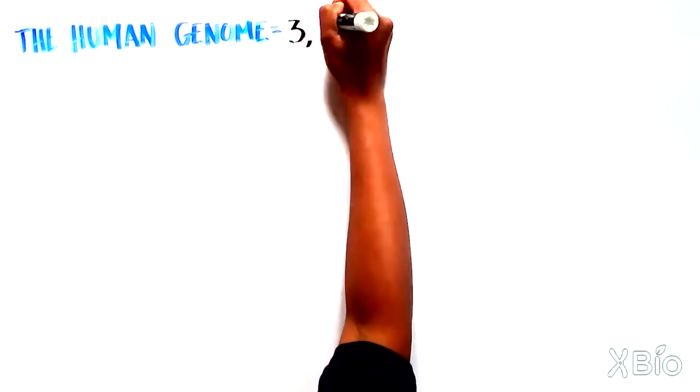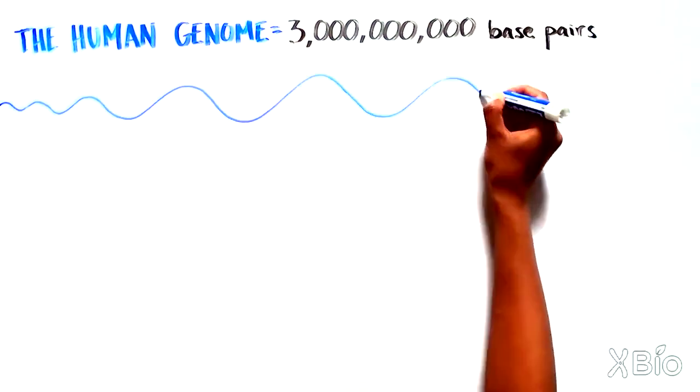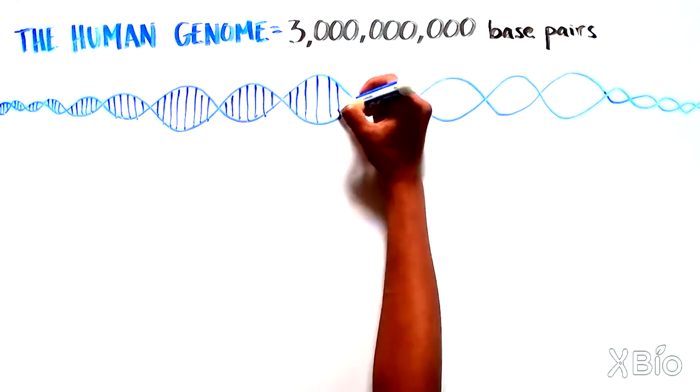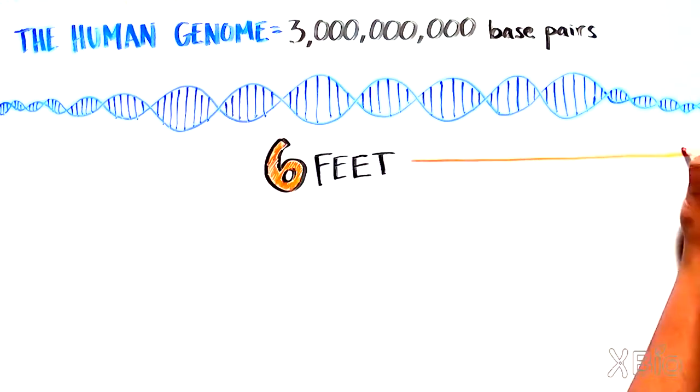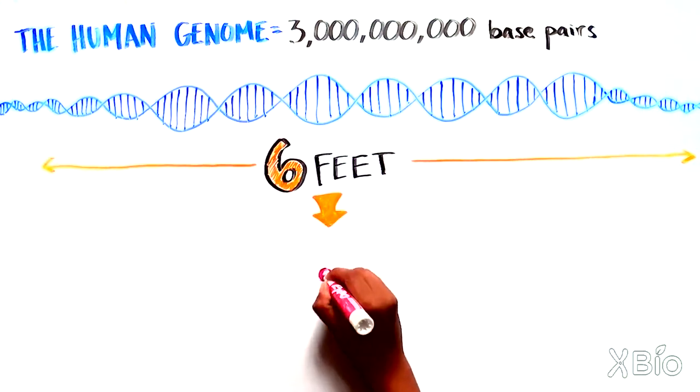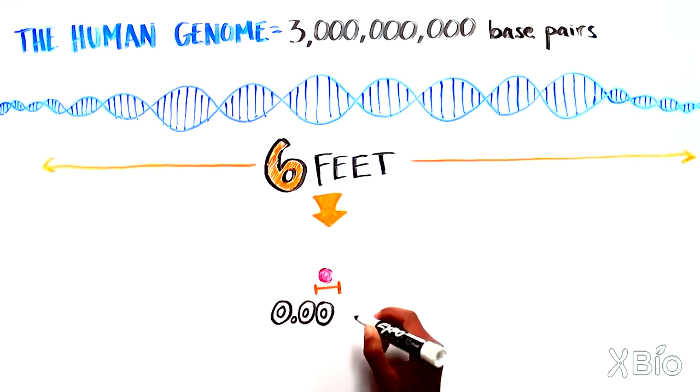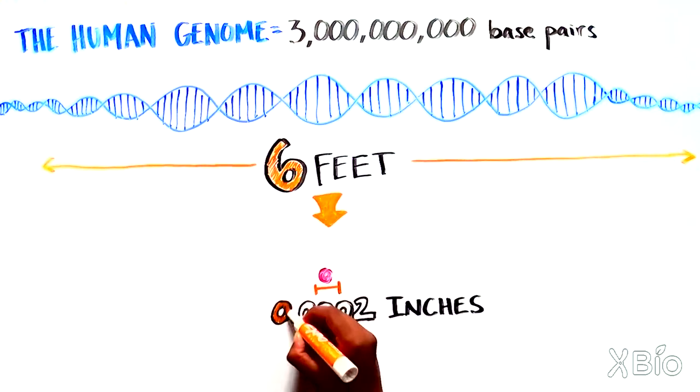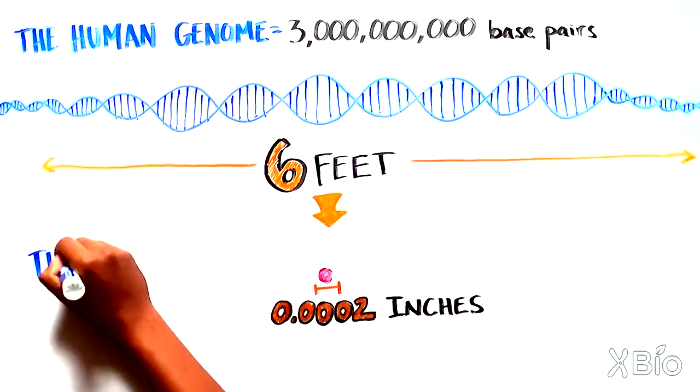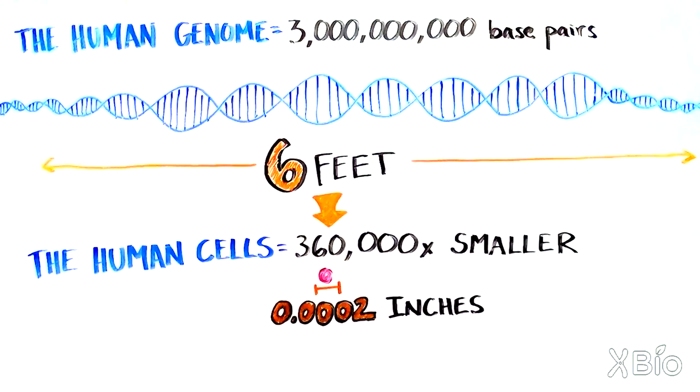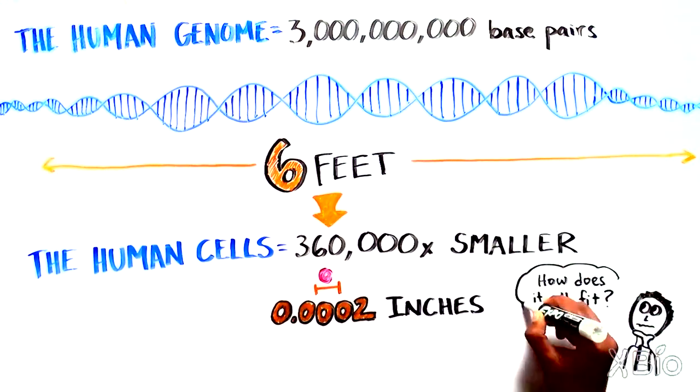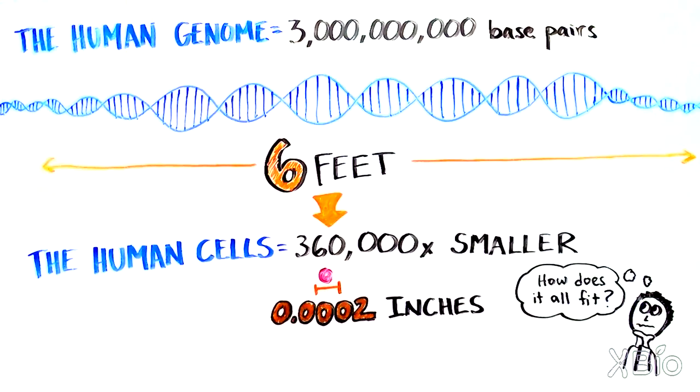The human genome contains over 3 billion base pairs of genetic information. If it were stretched out end to end, it would span approximately 6 feet. But each human cell that houses all this information is about 0.0002 inches across, approximately 360,000 times smaller than the length of all of our genetic information laid out side by side. So how in the world are we able to fit that massive amount of information into a tiny cell?